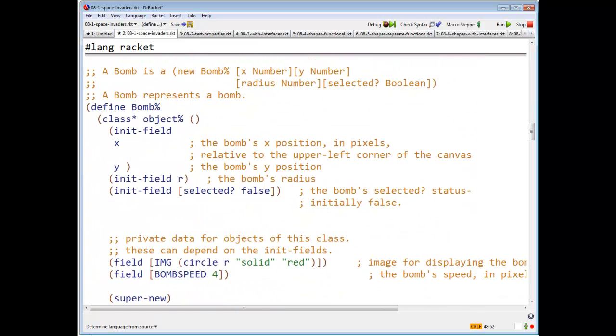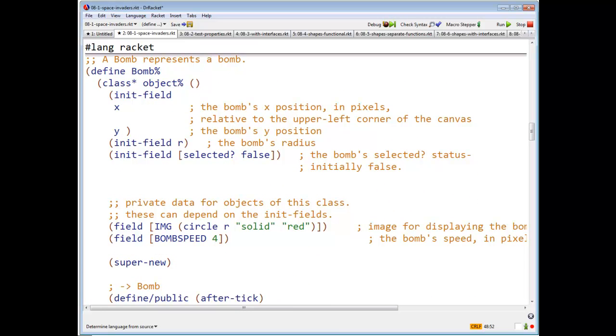BOM is going to be very similar. Now we have other fields, this is private data for objects of this class. For example, these can depend on the init field. So here I have a field called image, which is computed based on the init field.